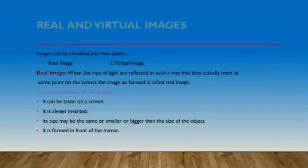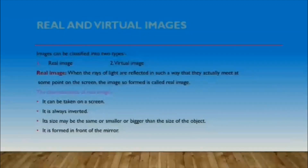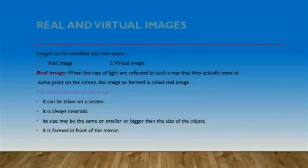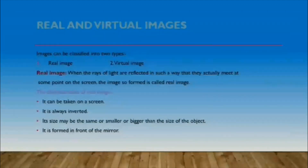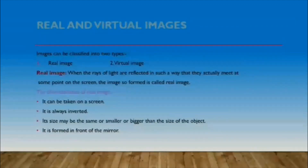When an object is placed in front of a mirror, the reflected rays of the object from the mirror form an image. Depending on the types of images formed, images can be classified into two types: number one, real image, and number two, virtual image.